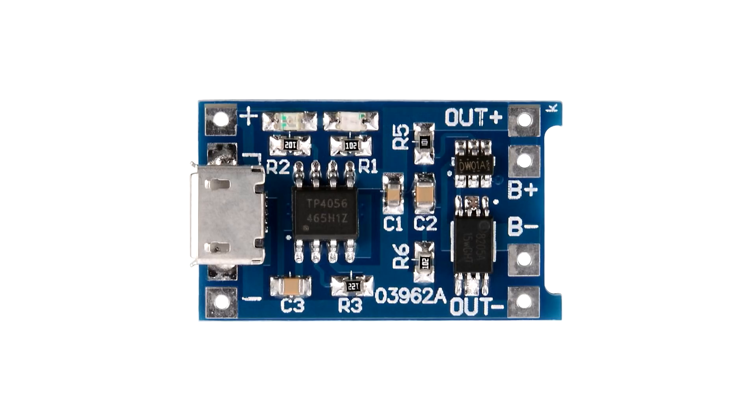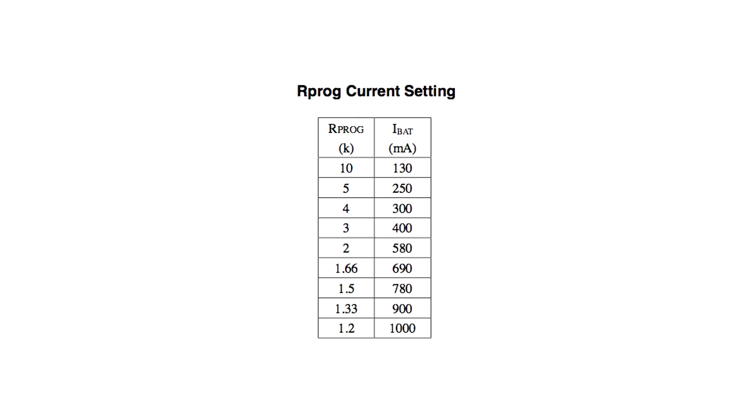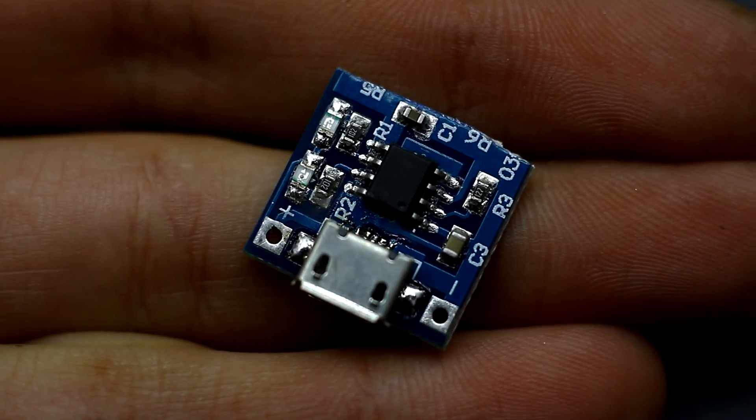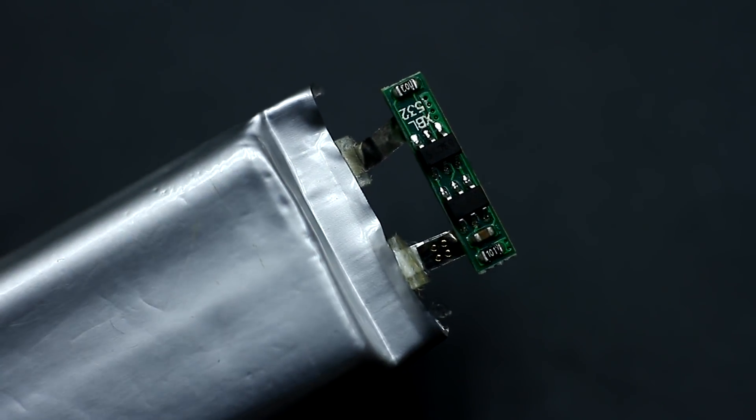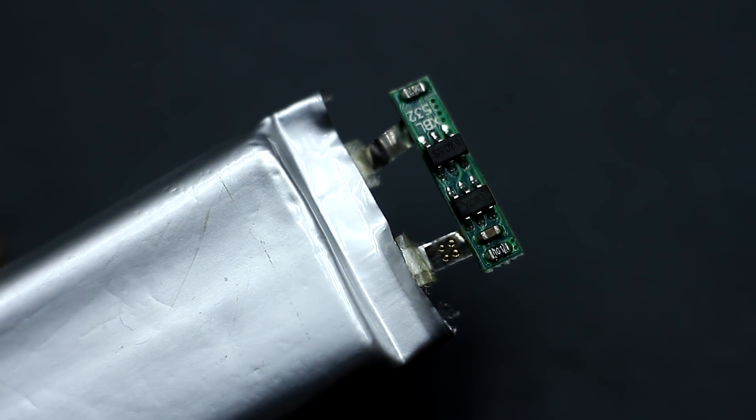So I reduced the charge current twice by replacing the current setting resistor on the board. The table of the dependence of the charging current on the resistance of this resistor is now before you. This board also had to be cut. The battery protection system was thrown out because the battery itself already had such protection.